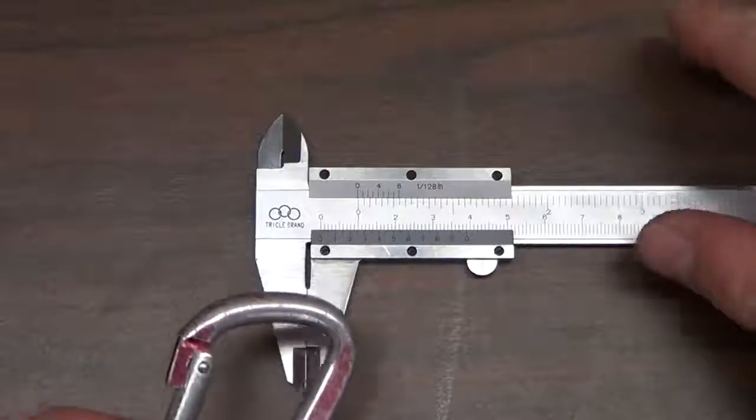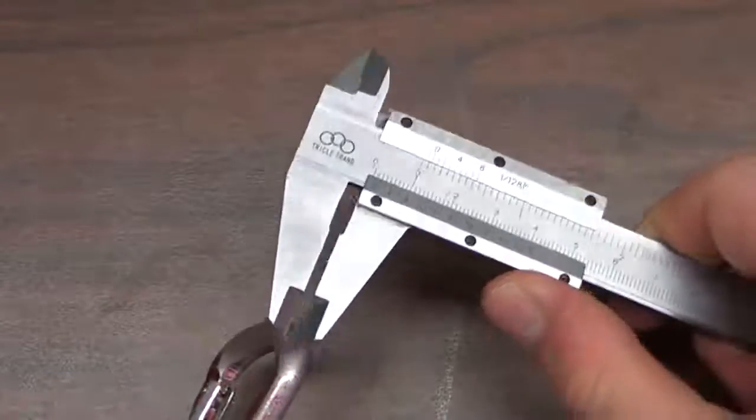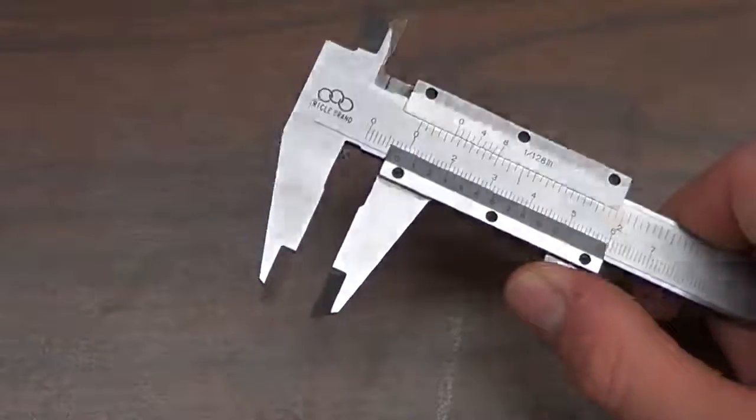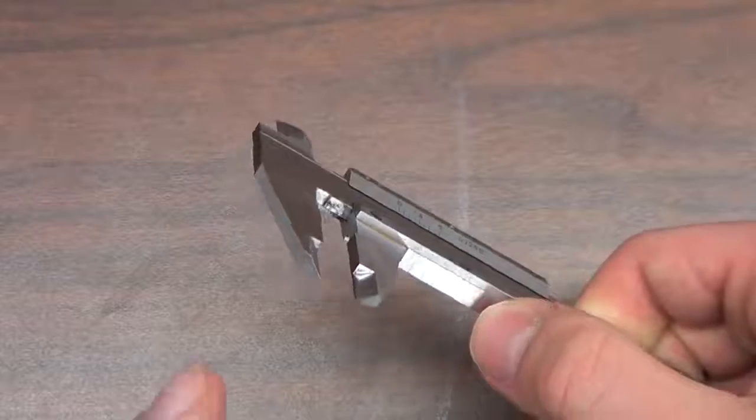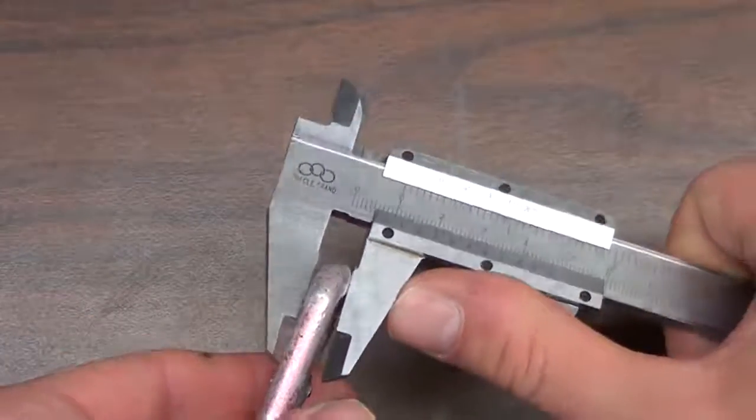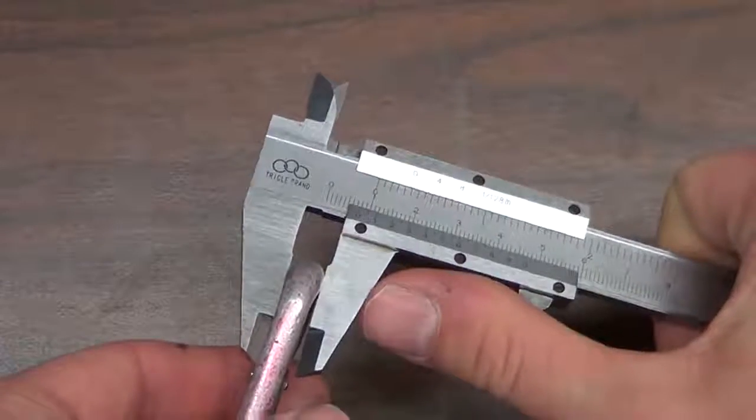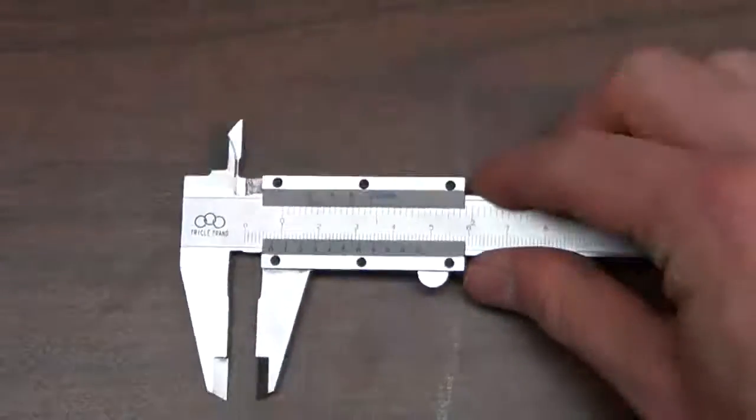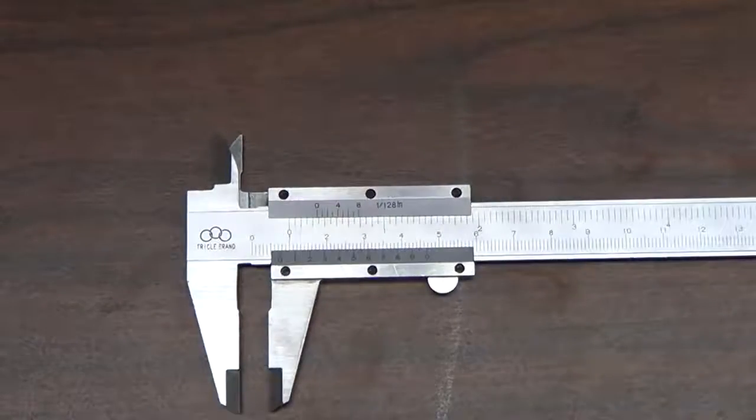We'll put our measurement object here between the teeth of the vernier scale and we'll close it. When we're measuring something there's a flat side here and we'll want to put our device in that and then close it with a little bit of pressure. With that value we're going to see what the measurement is.